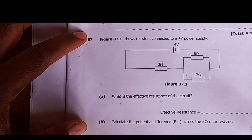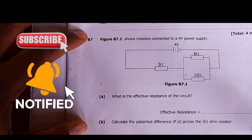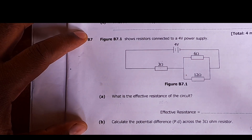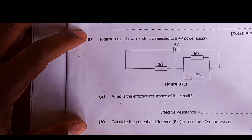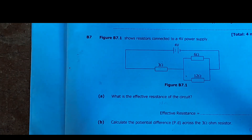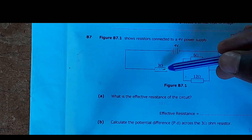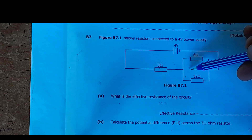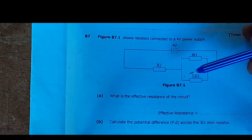Without any further ado, let's get started. The question says figure B 7.1 shows resistors connected to a four-volt power supply, and asks for the effective resistance of the circuit. We have two resistors connected in parallel to each other, and then there is one in series. We need to resolve the two parallel resistors into one equivalent resistor, which will then be in series with the remaining one.